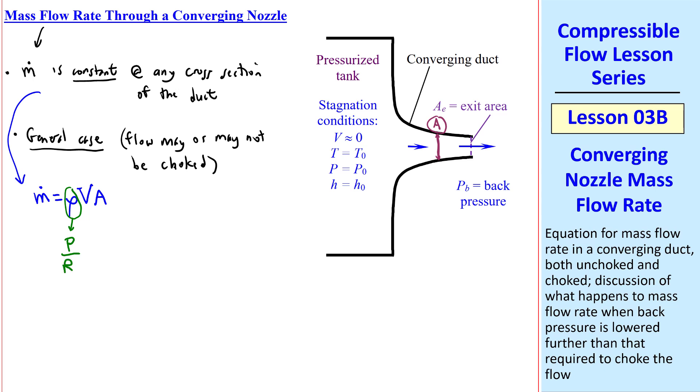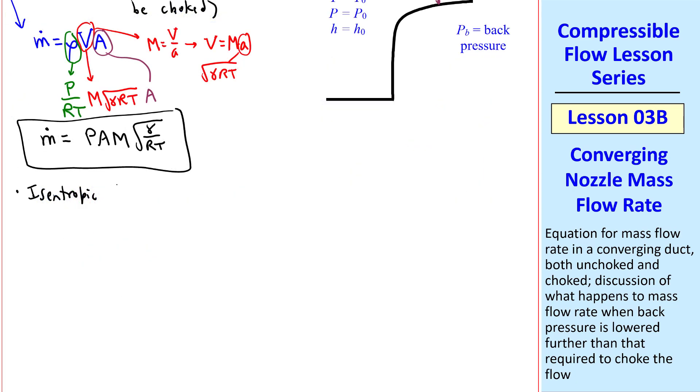Let's work on each of these variables. We'll use the ideal gas law for ρ. So for V, we know that Mach number is V over A, speed of sound. So V equals M times A, and A itself is the square root of γRT, since this is an ideal gas. So here we'll write M√(γRT), and then the area of course is just the area. A little bit of algebra yields m-dot equals PAM√(γ/RT).